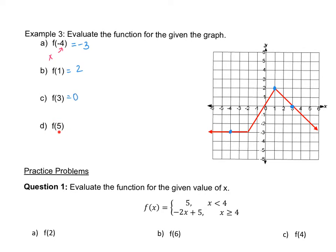Last but not least, we're looking for five. So when x equals five, the piecewise function hits right there and that y value right there is negative two. And that's it.